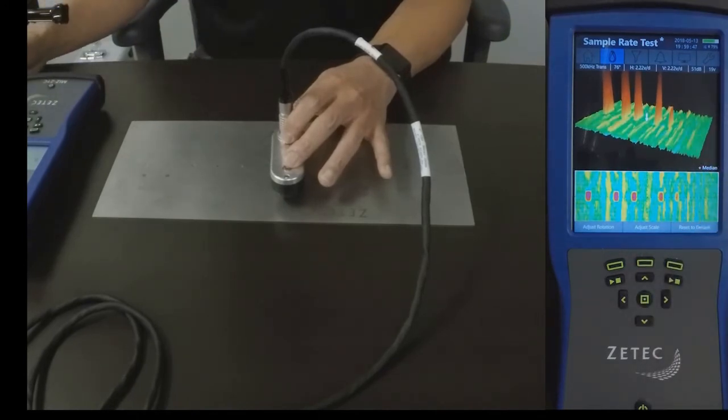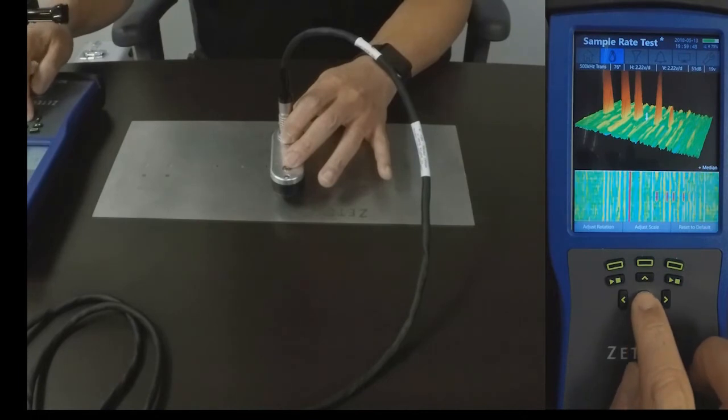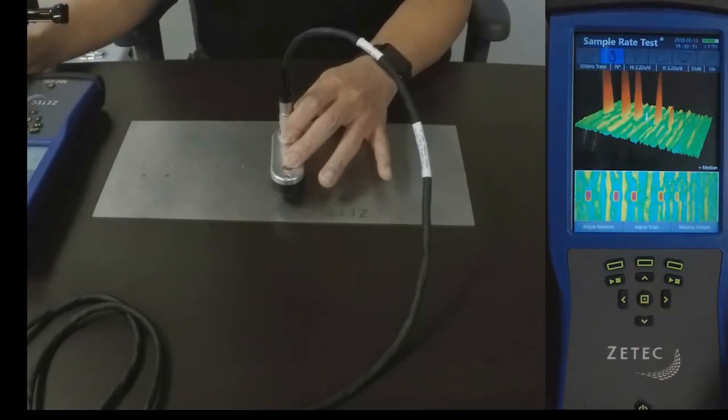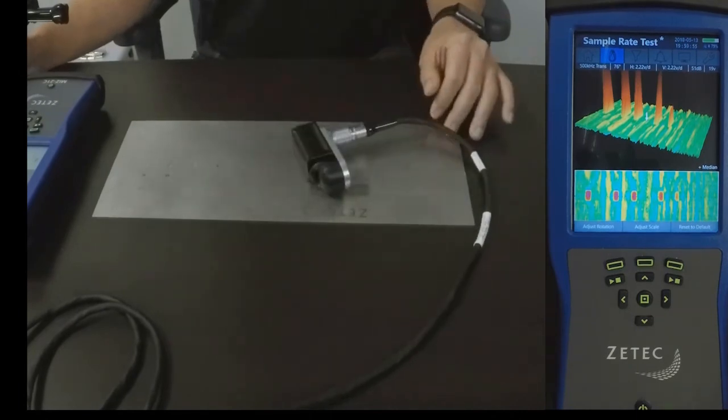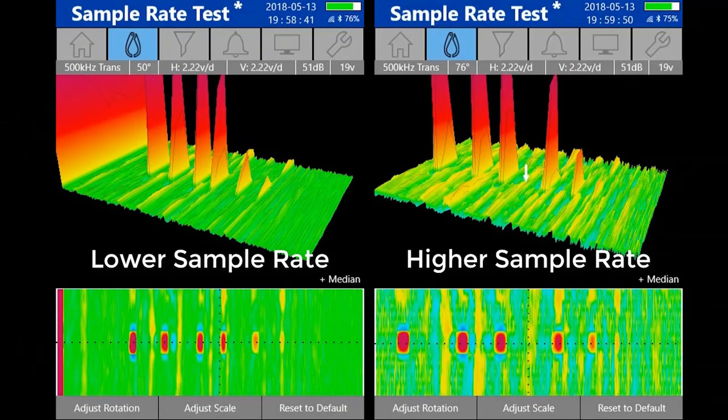With noise level as high as this, it is easy to see how a small flaw can be missed. With higher noise level, there is a greater chance of missing small flaws.